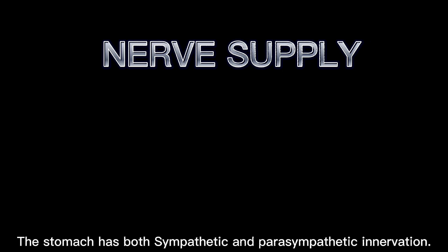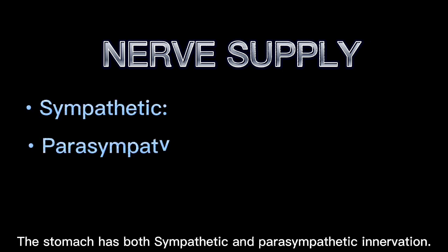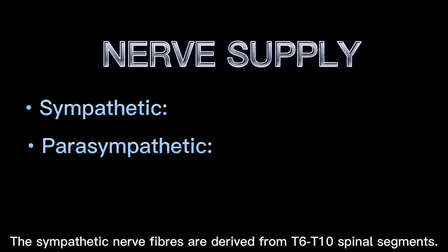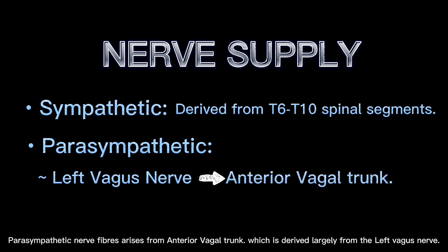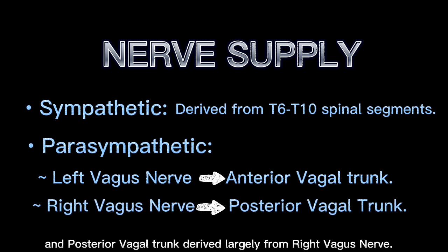Nerve supply: the stomach has both sympathetic and parasympathetic innervation. The sympathetic nerve fibers are derived from T6–T10 spinal segments. Parasympathetic nerve fibers arise from the anterior vagal trunk, derived largely from the left vagus nerve, and the posterior vagal trunk, derived largely from the right vagus nerve.